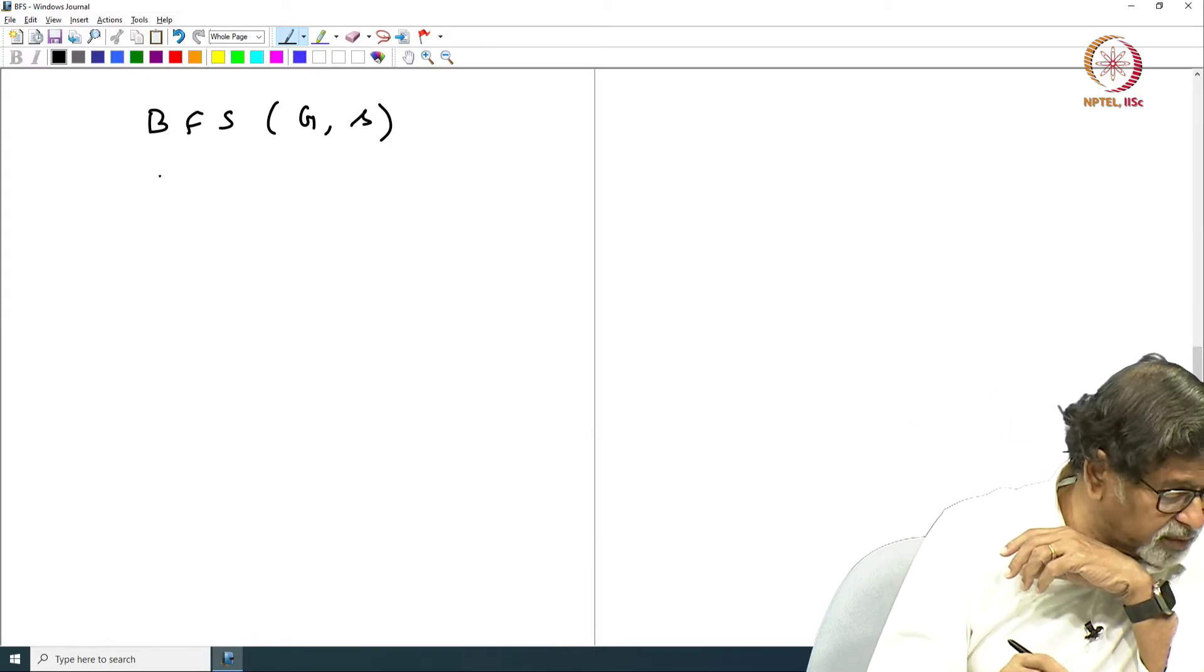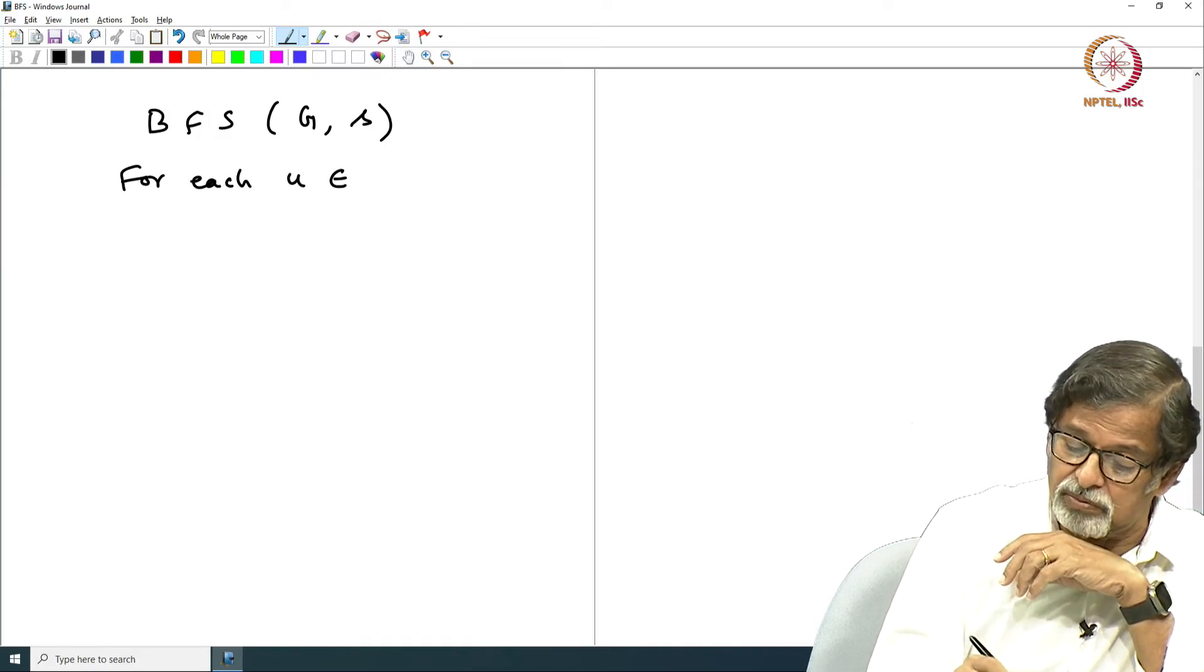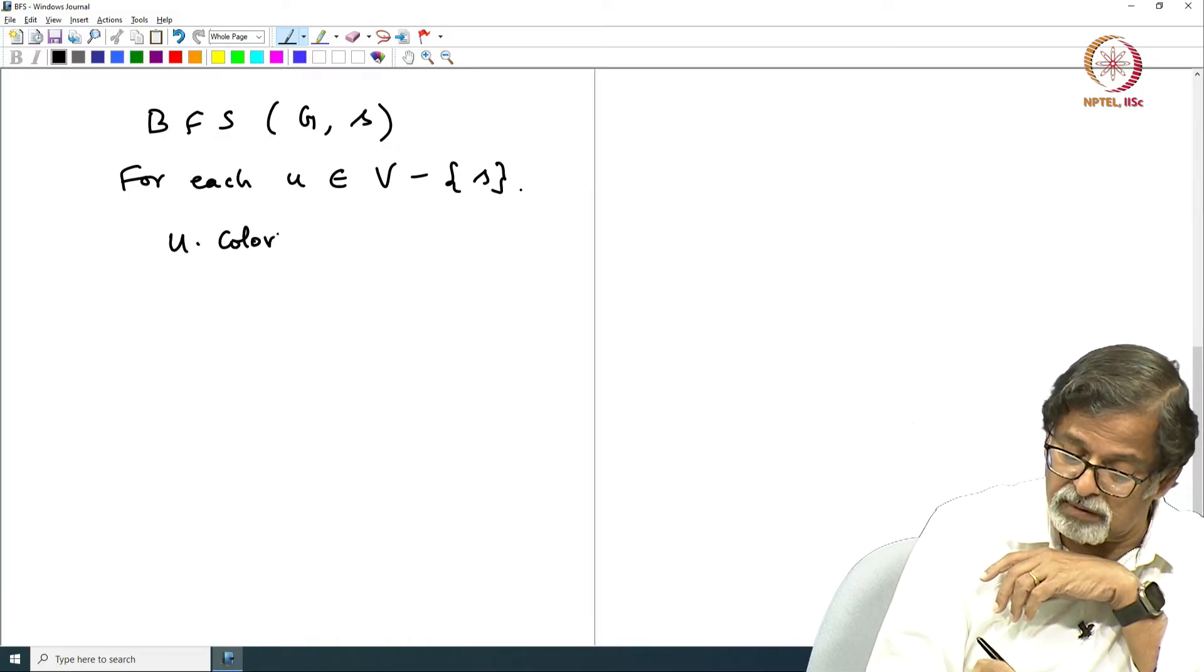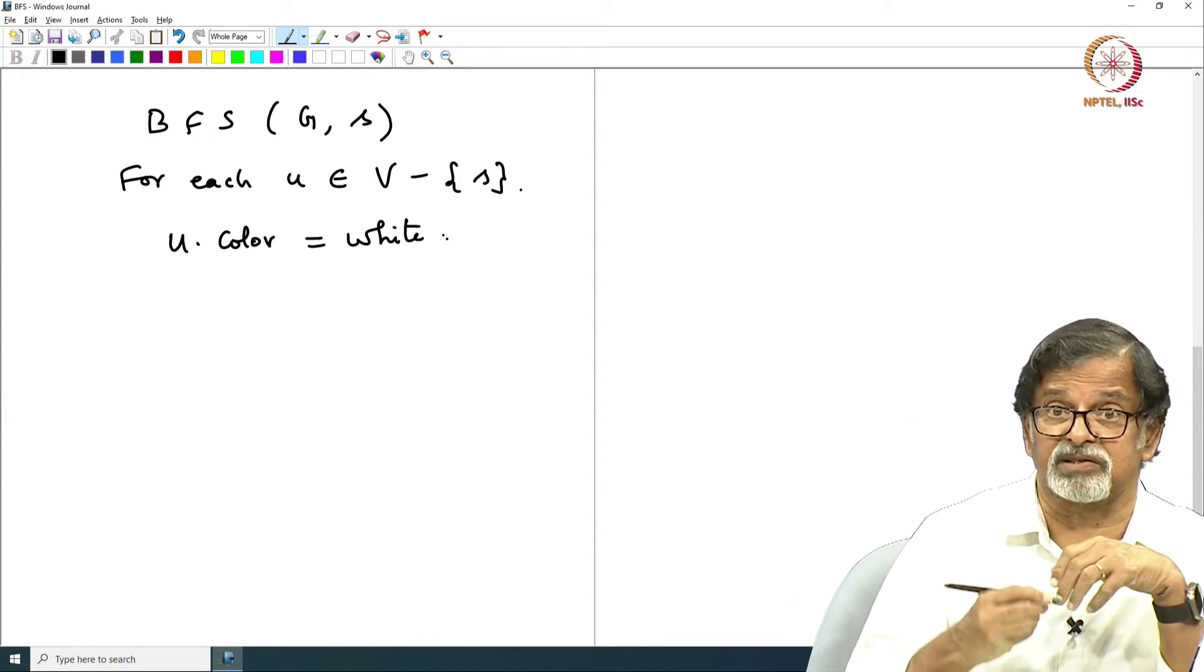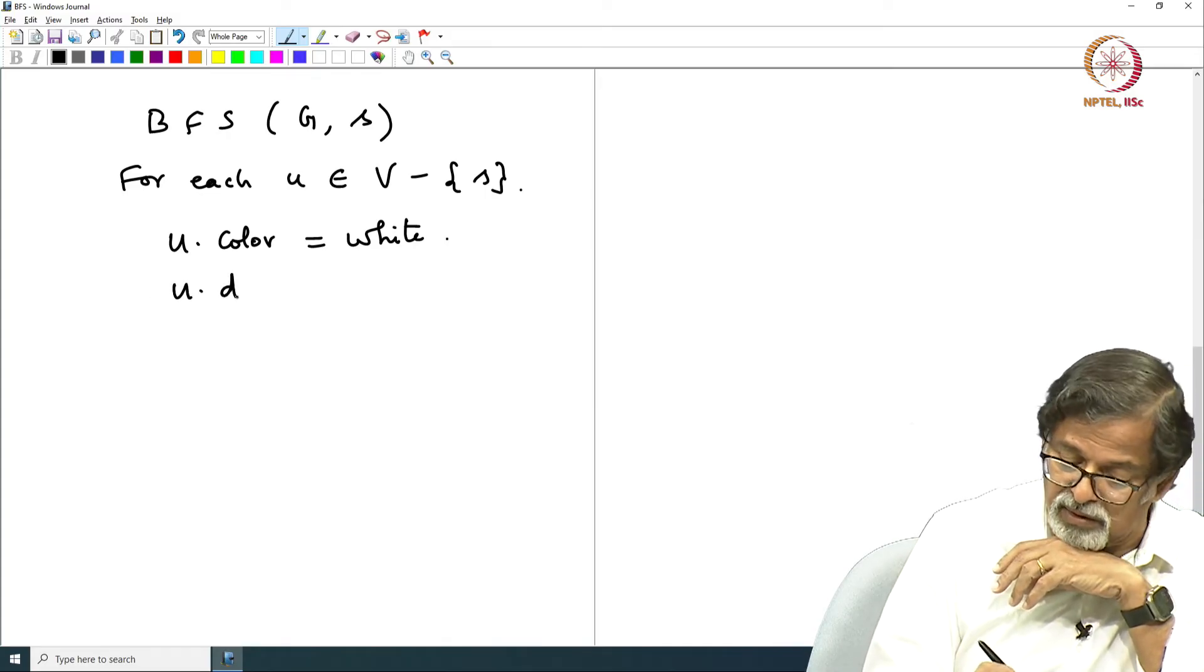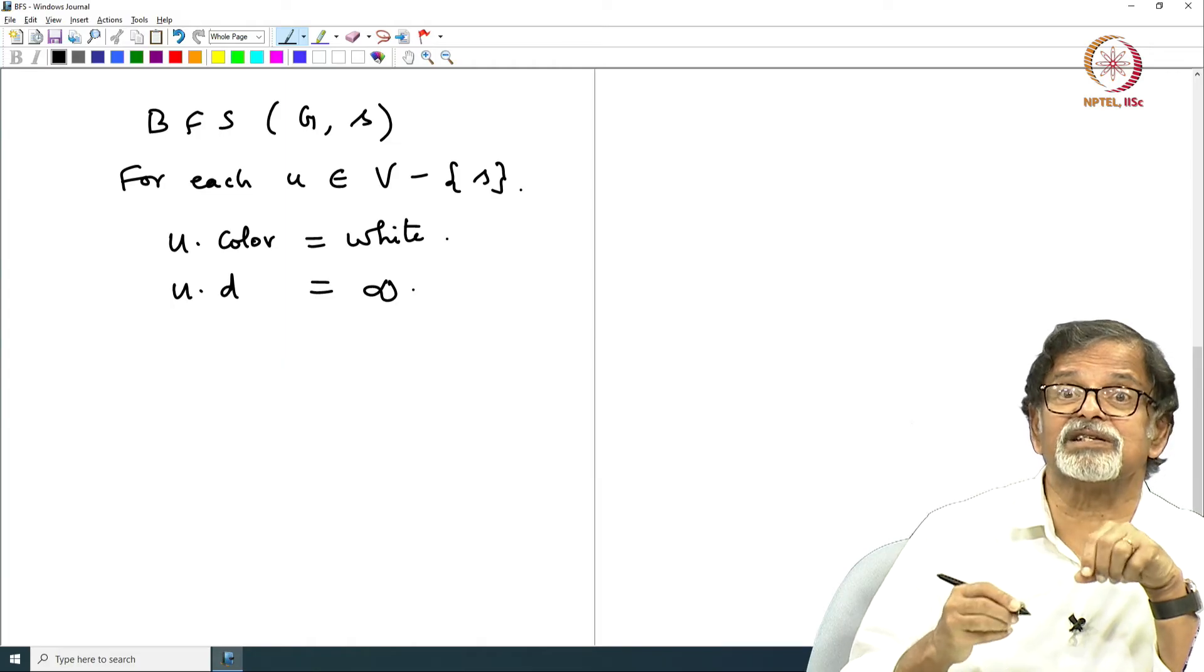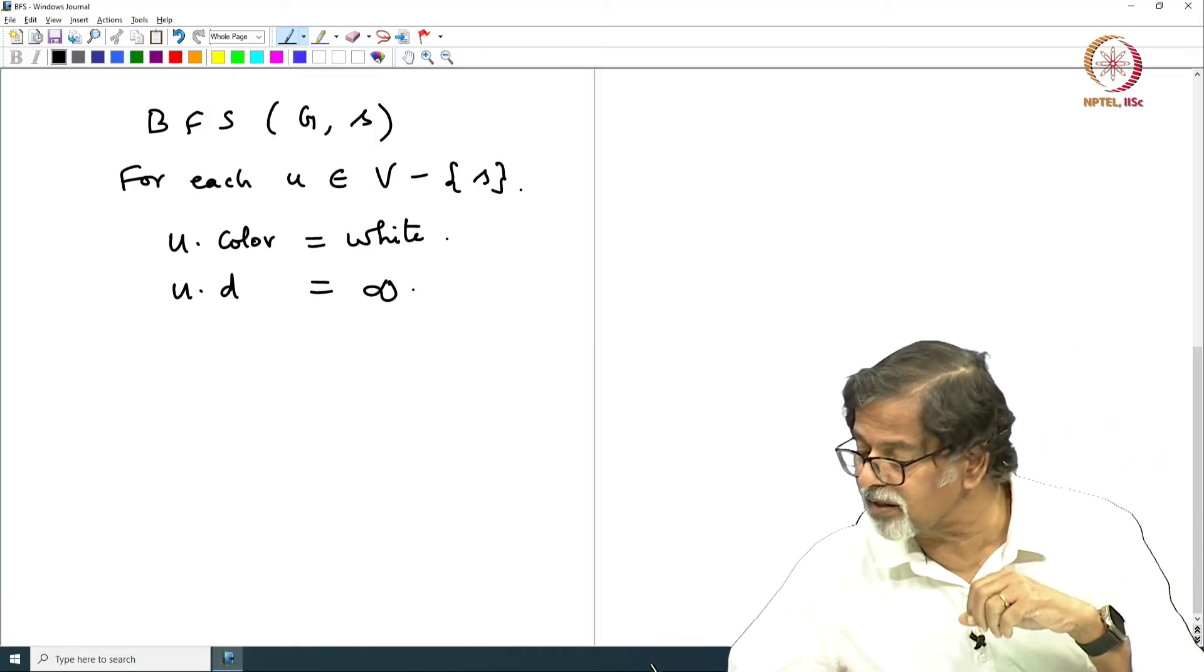You start breadth-first search of a graph from a source vertex s. Now for each u in V minus s, u.color equals white because it is not yet visited, not explored. u.d is infinity. This is a parameter which we will maintain which is a distance from the source, that is number of hops or number of edges.